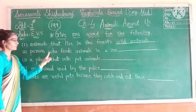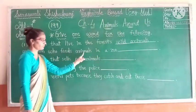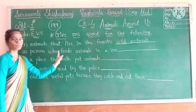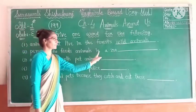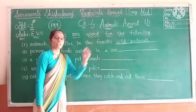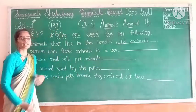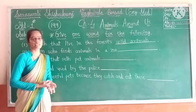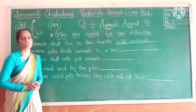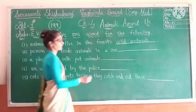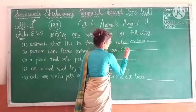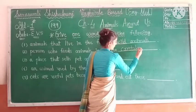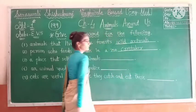Second number: Person who feeds animals in a zoo. As I explained earlier, in a national park or in a zoo, there is a person who feeds these animals — that is known as a caretaker. So the answer is caretaker.